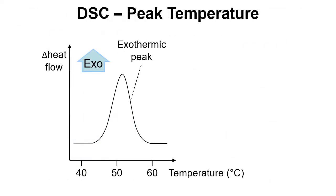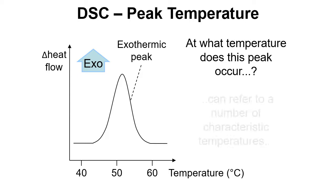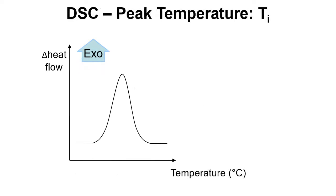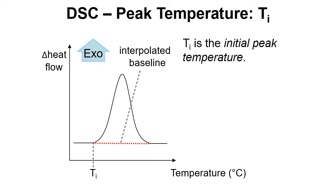Now we're going to think about peak temperature. So at what temperature does this peak occur? We can refer to a number of characteristic temperatures. Let's start off with Ti. This is the temperature that we can use to tell us about the peak. First thing we do is to have an interpolated baseline so we draw in a baseline and then we can work out Ti.